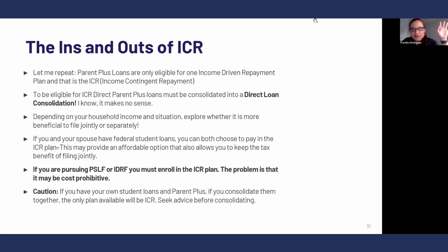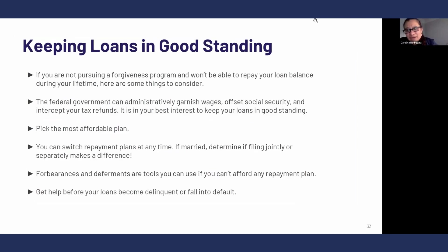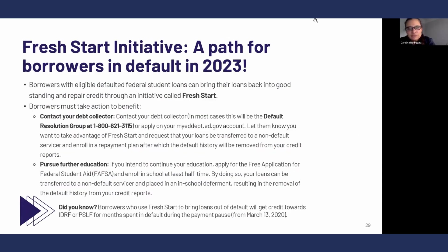The big takeaway is: if you want the ICR plan because you're pursuing a forgiveness program, you must have consolidated direct Parent PLUS loans. Keeping your loans in good standing until the end of time requires enrolling in the most affordable repayment plan and making sure that you renew it. If you're enrolling in a traditional plan, you don't really have to renew it every year — you just enroll and keep them in good standing, and avoid default.